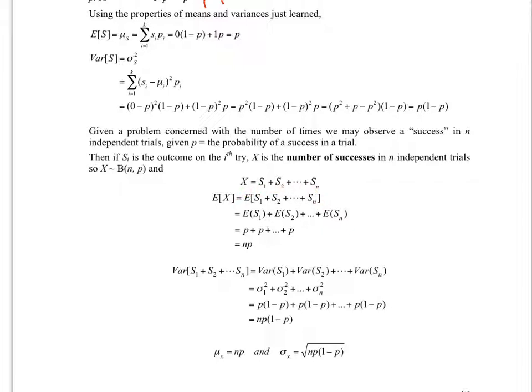The mean is just the sum of the means. Each of these S1 through Sn have the same probability as the tries are independent, so I'm going to just be adding nPs. My answer is nP, n times P.